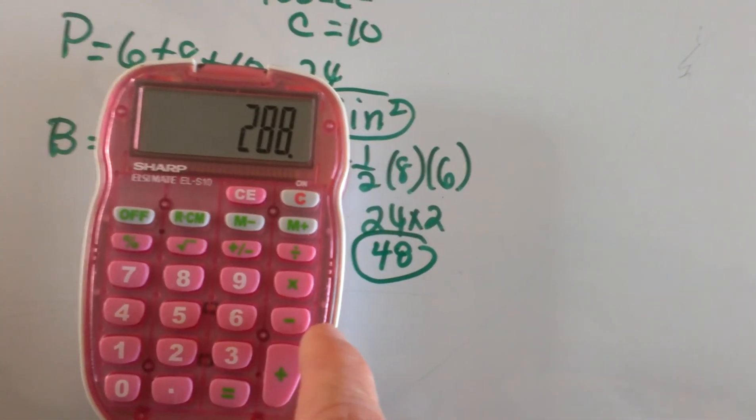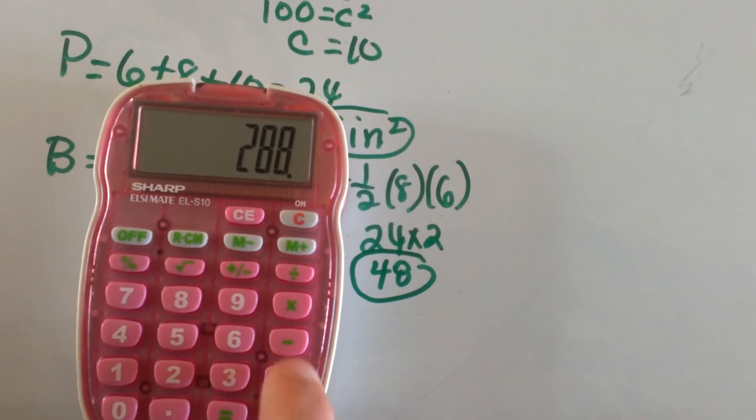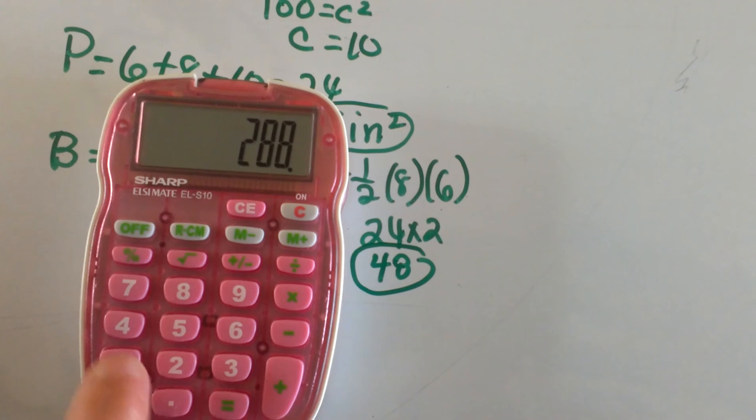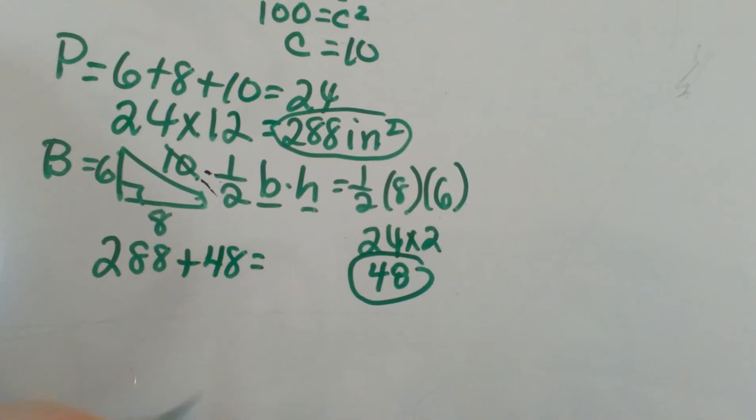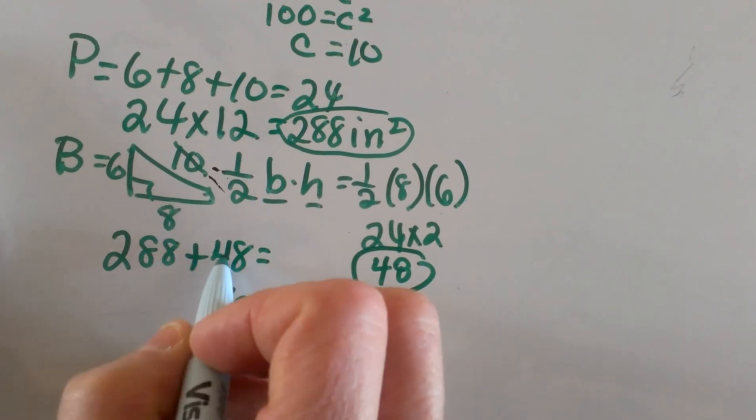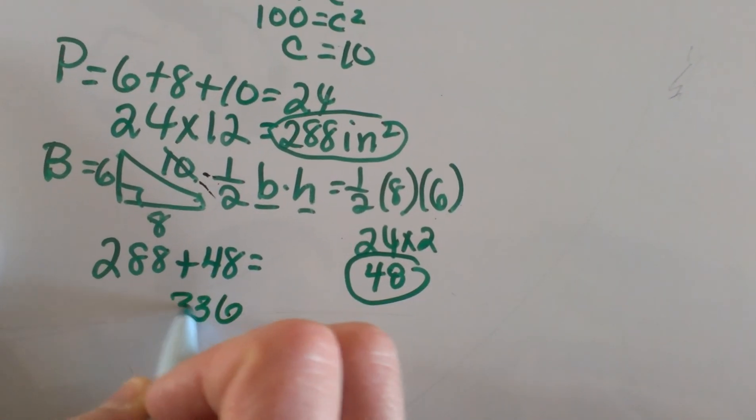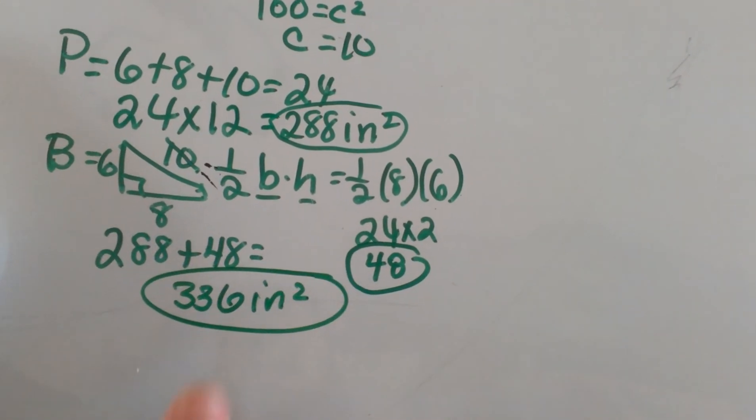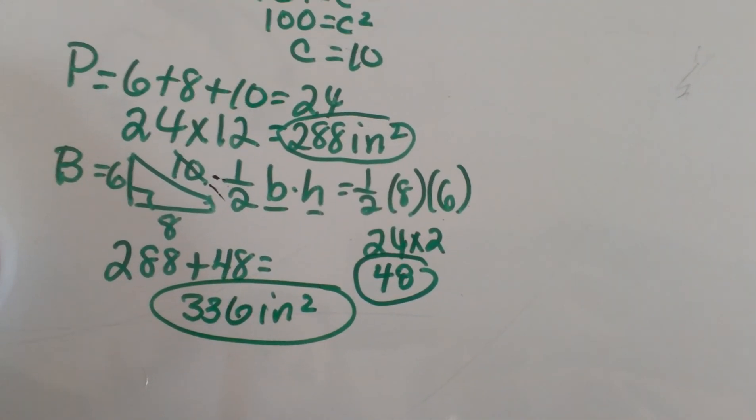Let's grab my calculator and add them together. That's 336 square units, and that's how you find the surface area of a prism.